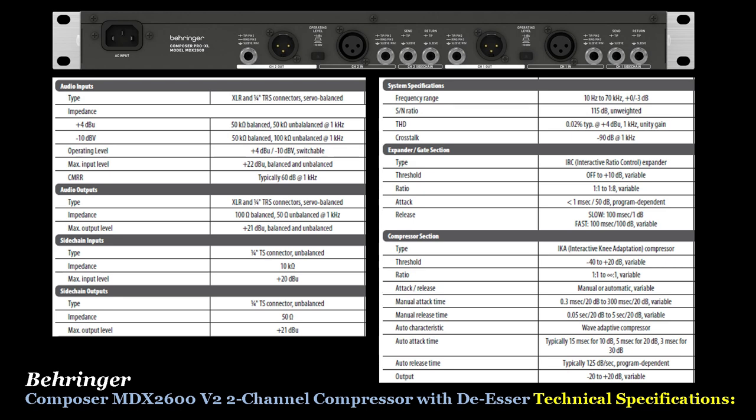The side chain inputs are quarter-inch TRS unbalanced connectors with impedance and max input level specs. The side chain outputs are also quarter-inch TRS unbalanced connectors with impedance and max output level specs. The system specifications cover frequency range, signal-to-noise ratio, total harmonic distortion, and crosstalk specifications.